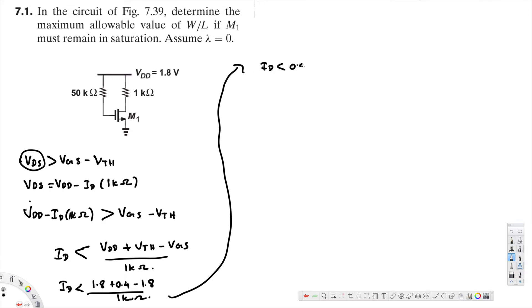1.8 plus 0.4 minus 1.8 divided by 1 kilo ohm, and that gives us our ID value. ID calculated will be 0.4 milliampere. Now there's another equation for ID: ID is equivalent to half mu N Cox W over L times VGS minus V threshold square.